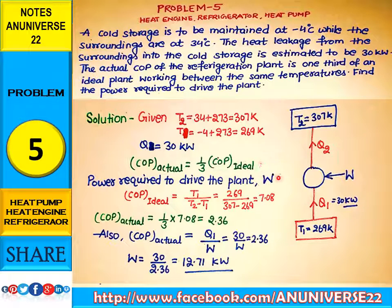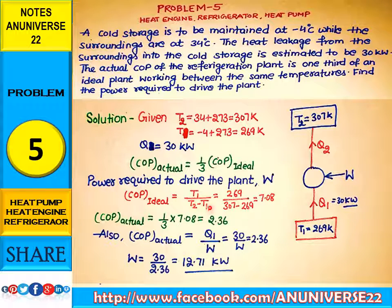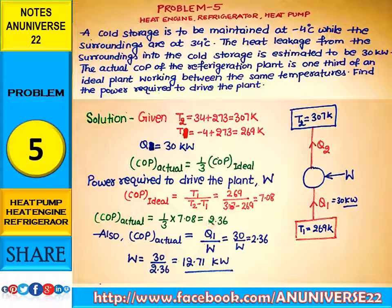COP ideal is the ratio of the lower temperature to the difference of higher minus lower temperature. Using the given temperatures, COP ideal equals 7.08. According to the condition, COP actual equals one third of ideal, that is 1/3 into 7.08, which equals 2.36.